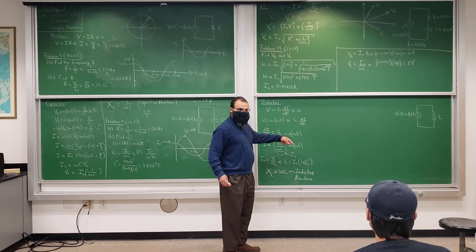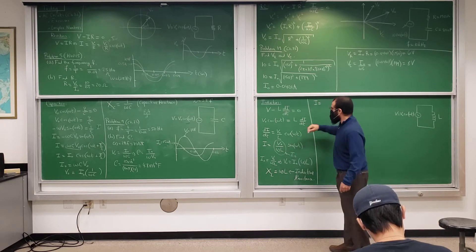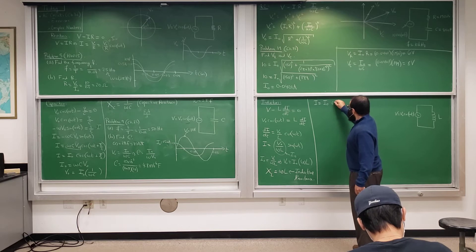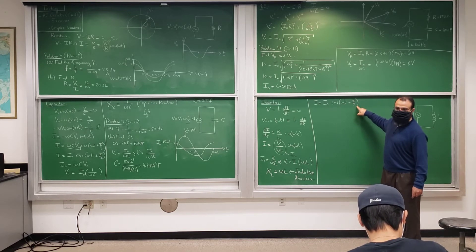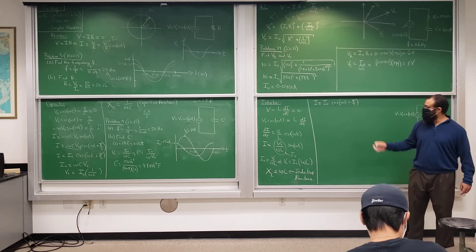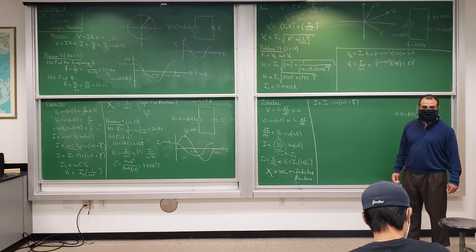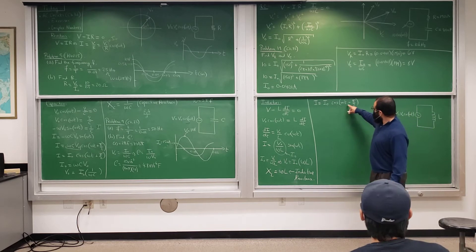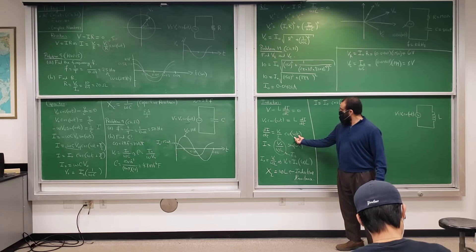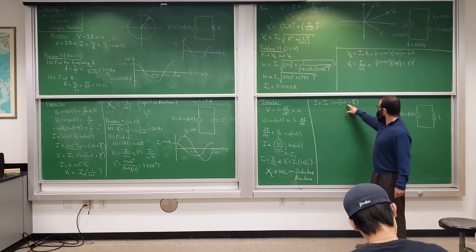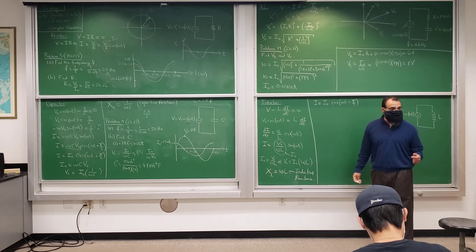We need to convert the sine to cosine to figure out whether the current lags or leads. The current is V0 over omega L times cosine of (omega t minus pi over 2). Cosine of (omega t minus pi/2) equals sine of omega t. So the current lags behind the voltage — the current's angle is always less than the voltage's angle.